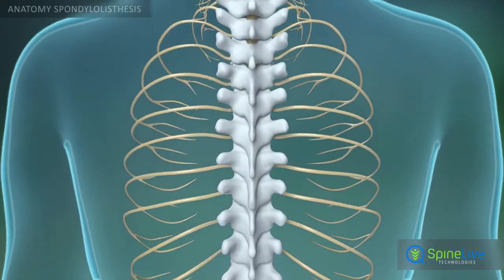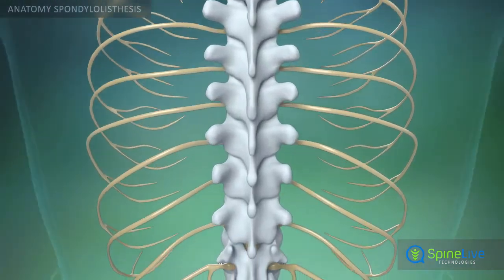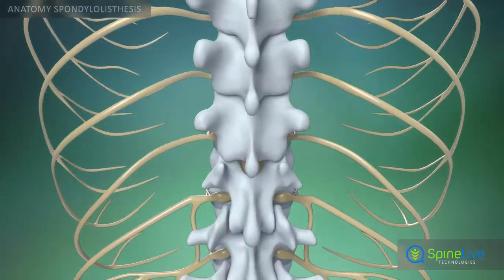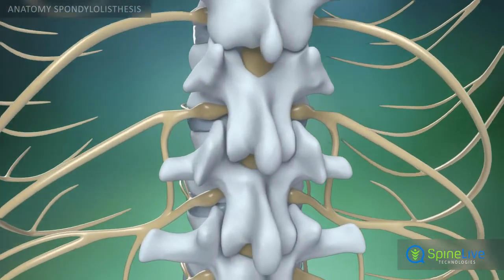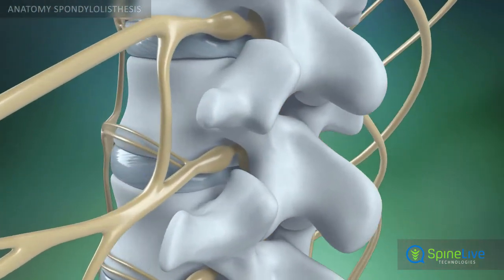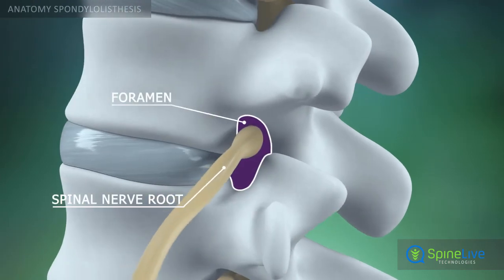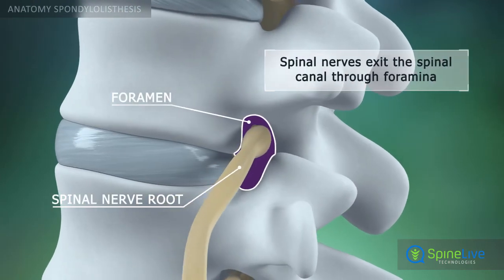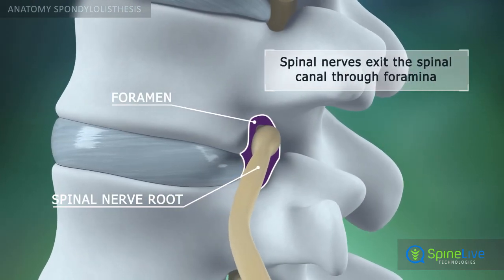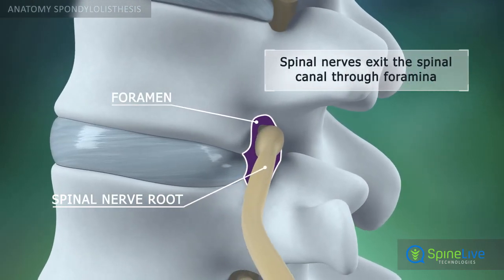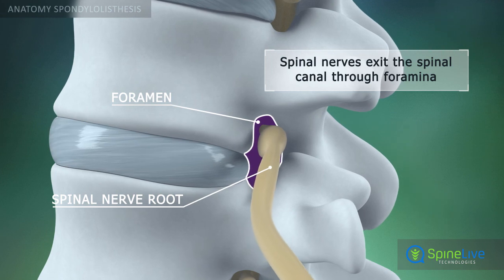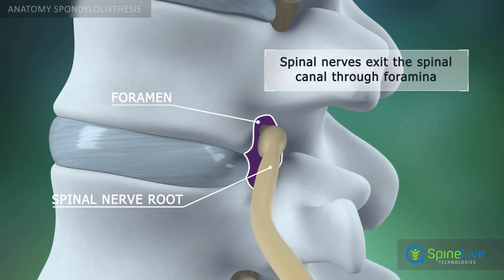The spinal nerves branch off your spinal cord in pairs and travel through small openings between your vertebrae, called intervertebral foramina.